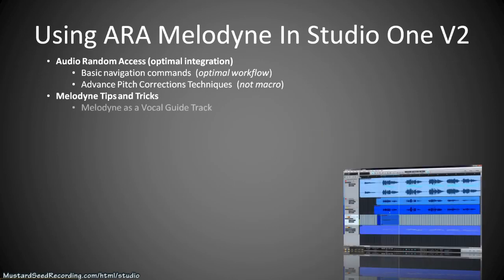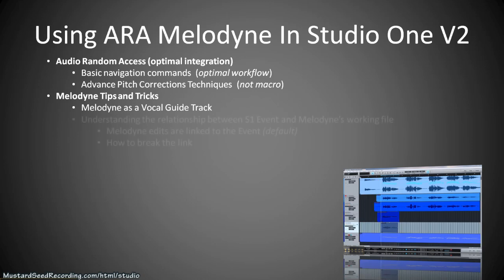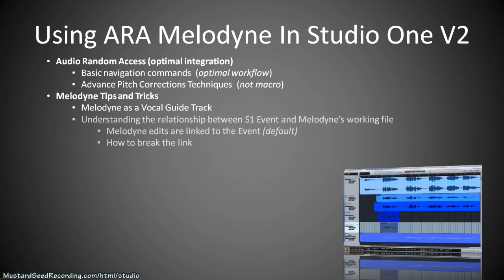For example, we'll show you how to use Melodyne to create vocal guide tracks. This is when you record the vocal, then you correct it to perfect pitch, and then you re-record the vocal while listening to the original track. Each iteration of that cycle actually produces a better vocal track. That's a great way to use Melodyne as a comping tool.